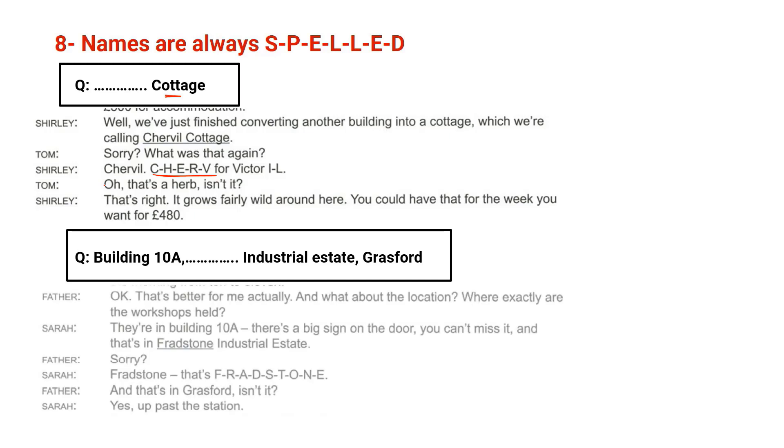Another question: Building 10A industrial estate. Grass for the script. Okay, that's better for me actually, and what about the location? Where exactly are the workshops held? They are in building 10A. There is a big sign on the door, you can't miss it. And that's in Fredstone industrial estate. Sorry, Fredstone? That's F-R-A-D-S-T-O-N-E. So when the name is spelled here, you start writing your answers. And that's very simple.